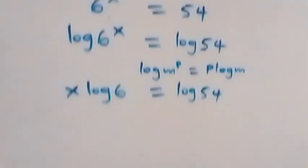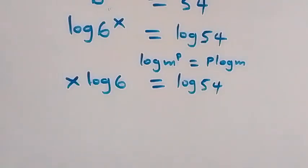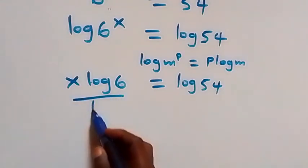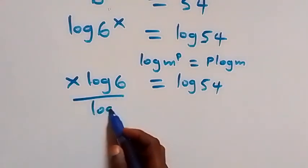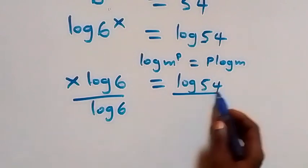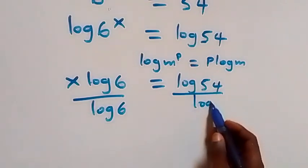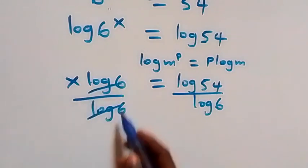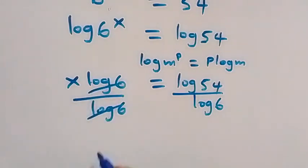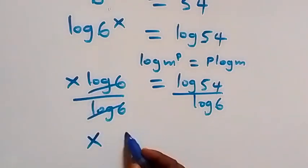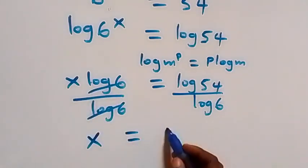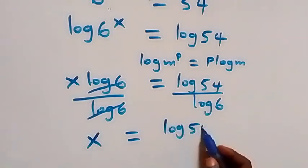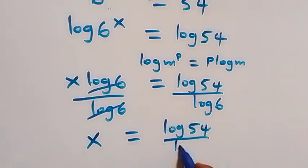From here, we can divide both sides by log 6. Dividing both sides by log 6, the log 6 cancels with each other, giving us x equals to log 54 over log 6.